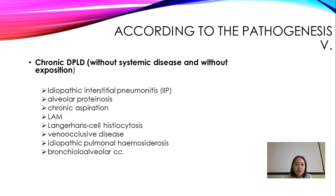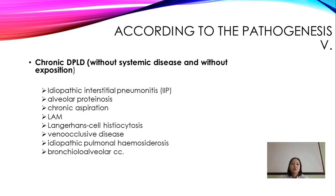Under chronic diseases without systemic disease and without known exposures, you see diseases like idiopathic interstitial pneumonitis, alveolar proteinosis, chronic aspiration, LAM (lymphangioleiomyomatosis), and Langerhans cell histiocytosis.